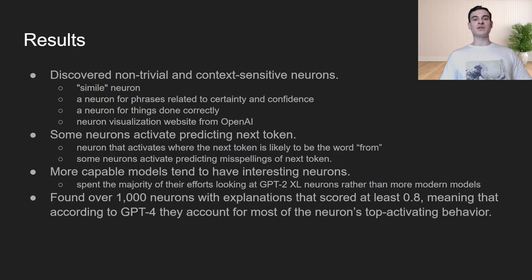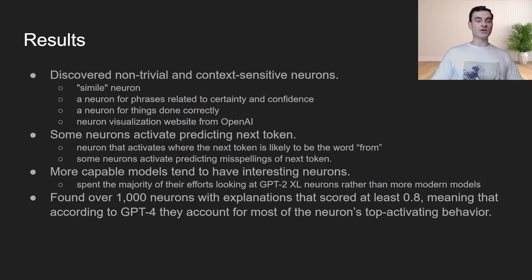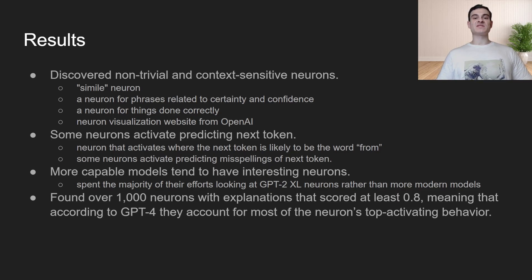So by utilizing this workflow, what were the types of neurons they ended up discovering? They found a lot of really interesting neurons — for example, a simile neuron, a neuron for phrases related to certainty and confidence, and a neuron for things done correctly. OpenAI has a visualization website where you can dig in and see all the hypotheses generated from the neurons. They also found some neurons that predict the next token — for instance, neurons that predicted the next token would be the word 'from,' and others that predicted a misspelling, like 'form' instead of 'from.' The more capable models tended to have more interesting neurons. In total, they found over 1,000 neurons that scored above 0.8, meaning GPT-4's hypothesis accounts for most of those neurons' top activating behavior.